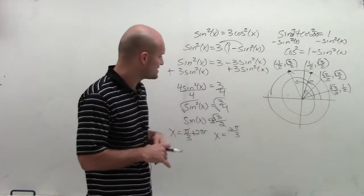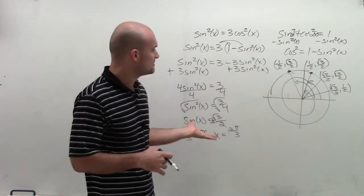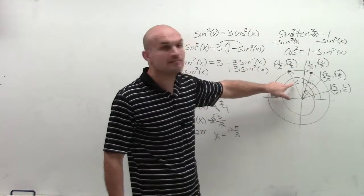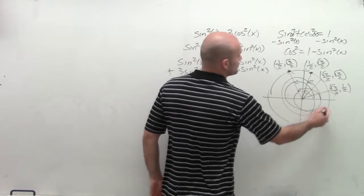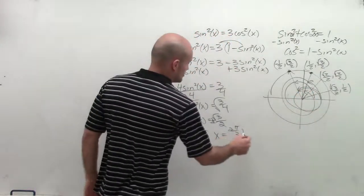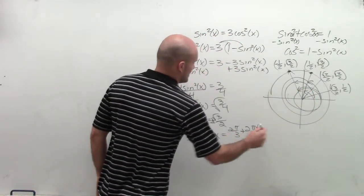Now for my next solution, I say x equals 2 pi divided by 3. And where else would my sine value be negative? Well, at this value. And I can keep on adding again revolutions of 2 pi times n. So plus 2 pi n.